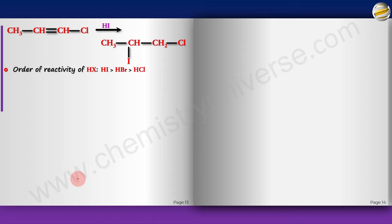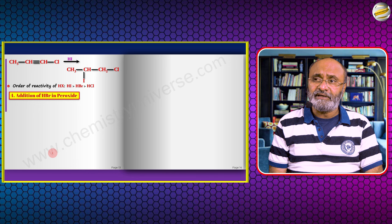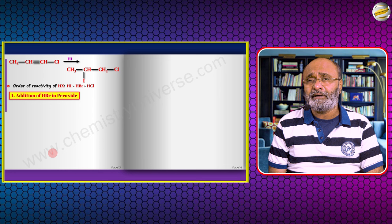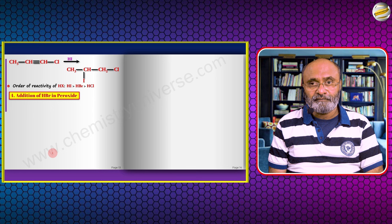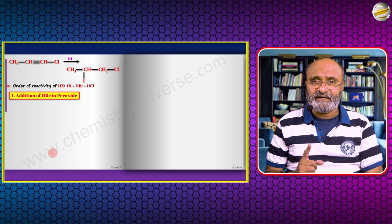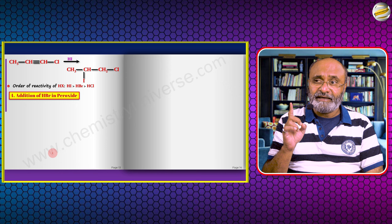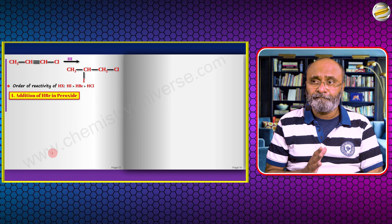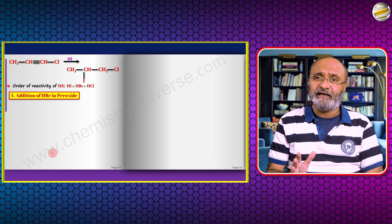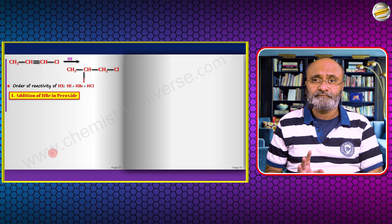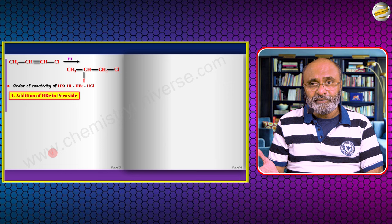Now comes addition of HBr with peroxide. This is an important reaction to remember. When HBr is added under polar conditions, the Markovnikov product is the major product. But if added under peroxide conditions, you get a free radical reaction and the product is an anti-Markovnikov product — this is called the peroxide effect or Kharash effect, proposed by Maurice Selegic Kharash in 1933. This anti-Markovnikov addition under peroxide only happens with HBr, not with HCl, HI, or HF.